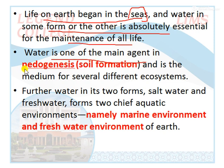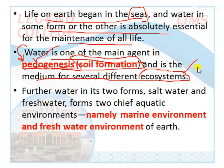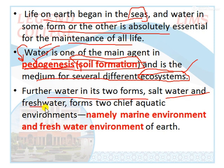Water is one of the main agents in pedogenesis — that is, soil formation. 'Pedo' means soil and 'genesis' means process or formation. Water plays a very important role in pedogenesis. Water is also a medium for several different ecosystems — many aquatic ecosystems including fish, organisms, and plants are water-based. Regarding the distribution of water: 75% of Earth is covered with water, and of this 75%, 97% is marine water and only 3% is fresh water.